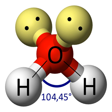Some AX₆E₁ molecules — e.g., xenon hexafluoride and the Te and Bi anions TeCl₆²⁻, TeBr₆²⁻, BiCl₆³⁻, BiBr₆³⁻, and BiI₆³⁻ — are octahedral rather than pentagonal pyramidal, and the lone pair does not affect the geometry to the degree predicted by VSEPR. Similarly, the octafluoroxenate ion in nitrosonium octafluoroxenate is a square antiprism and not a bicapped trigonal prism as predicted by VSEPR for an AX₈E₁ molecule, despite having a lone pair. One rationalization is that steric crowding of the ligands allows little or no room for the non-bonding lone pair. Another rationalization is the inert pair effect.